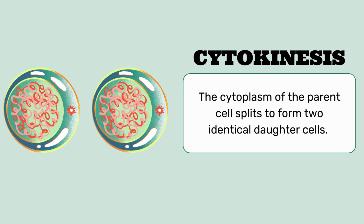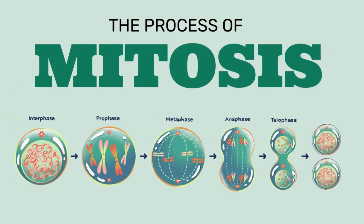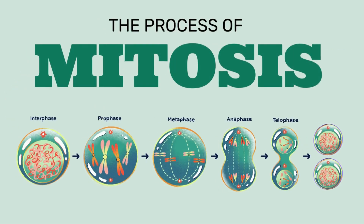Now you can understand what mitosis is. Mitosis is a process in which a single cell passes through different stages and forms two separate cells, which grow and again divide into two and then many cells. This is the whole process of mitosis. I hope you all understand the complete process of mitosis.